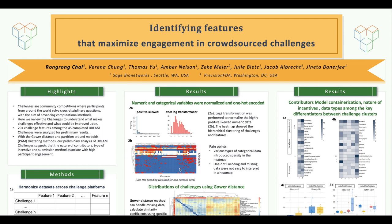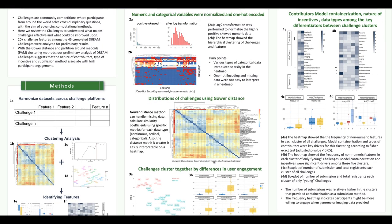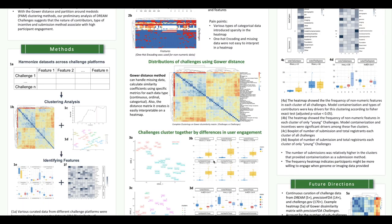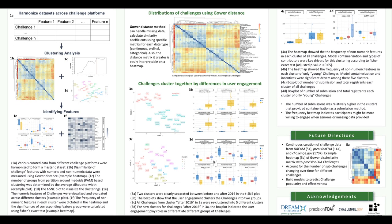However, as you can see, there is a lot of sparsity in the heatmap in figure 2b, and it's not easy to interpret. That's because we have a lot of categorical data and missing data. Therefore, we decided to use the Gower distance method, which works well for mixed-type data and can also handle missing data.